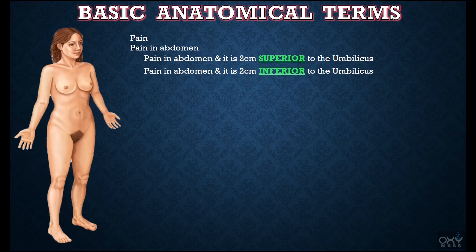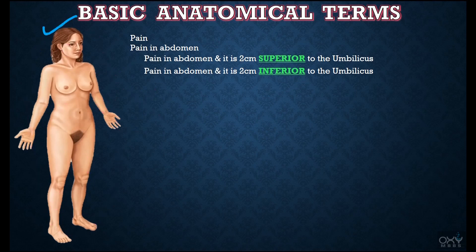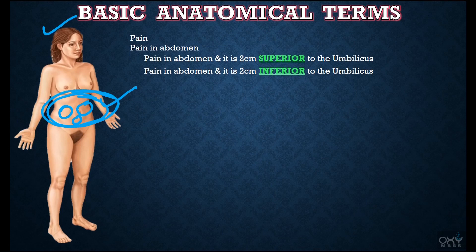Let's start. This lady says 'I have pain in the body.' In the body means this pain can be here, here, here, or anywhere in the body — it means we are not able to find out where the pain is actually present. Now this lady says 'I have pain in the abdominal region,' which means the pain can be here, here, or anywhere in the abdominal region. Still we are not sure where the pain is actually present.